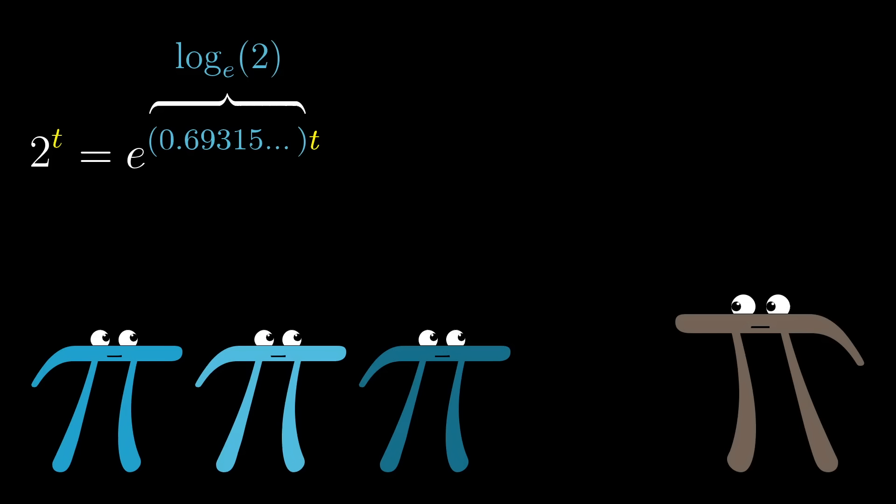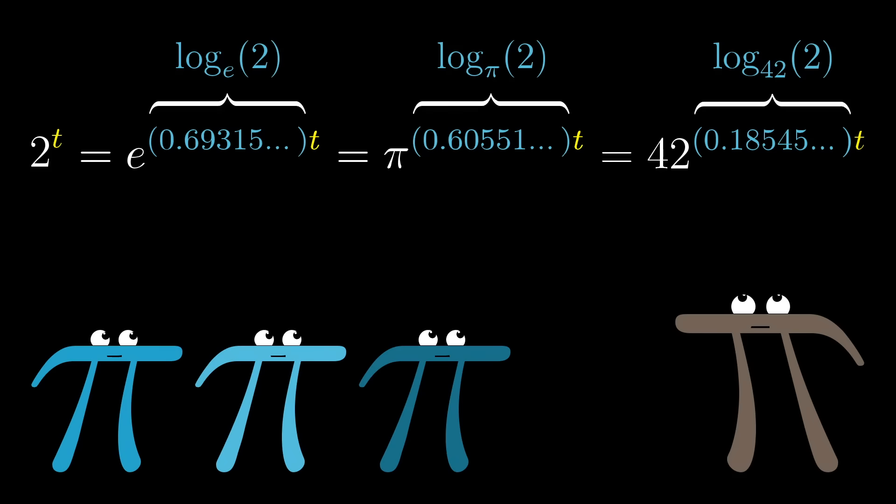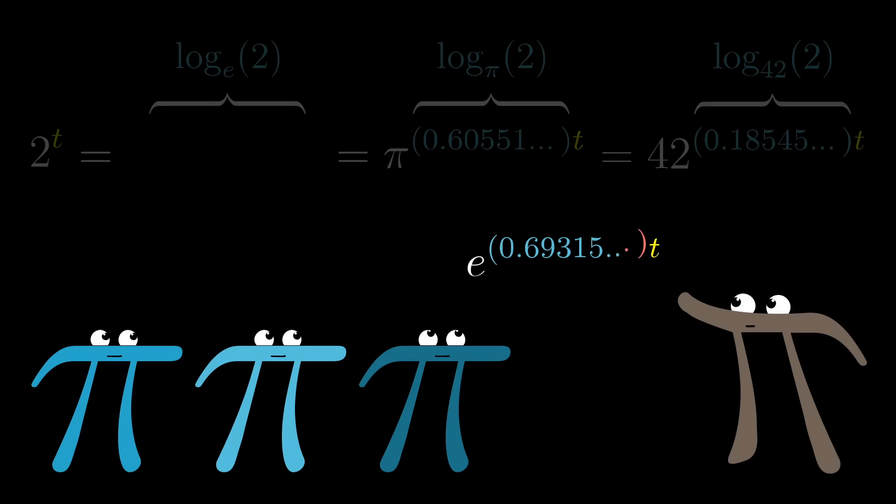At the risk of staying over-focused on the symbols here, I really want to emphasize that there are many, many ways to write down any particular exponential function. And when you see something written as e to some constant times t, that's a choice that we make to write it that way, and the number e is not fundamental to that function itself. What is special about writing exponentials in terms of e like this, is that it gives that constant in the exponent a nice, readable meaning. Here, let me show you what I mean.